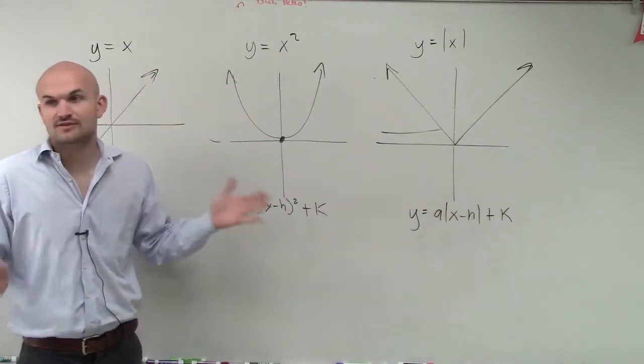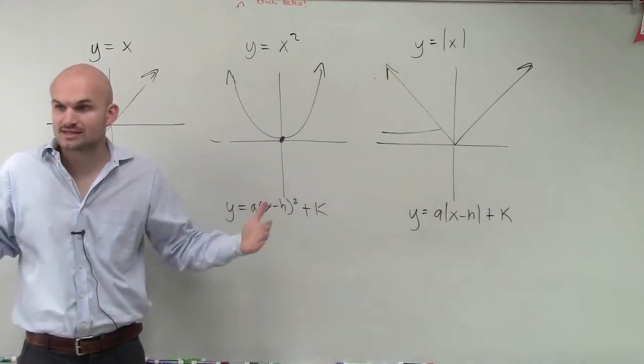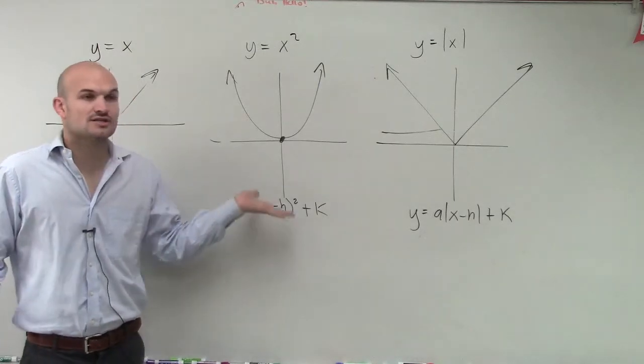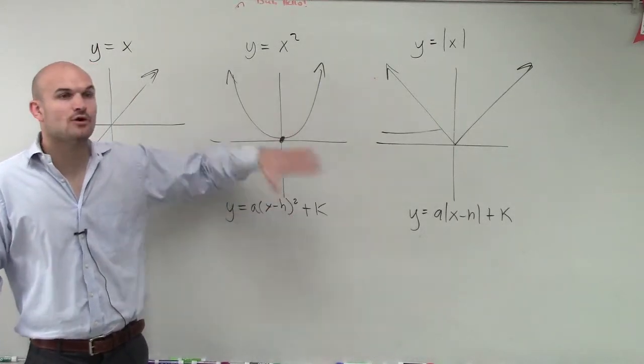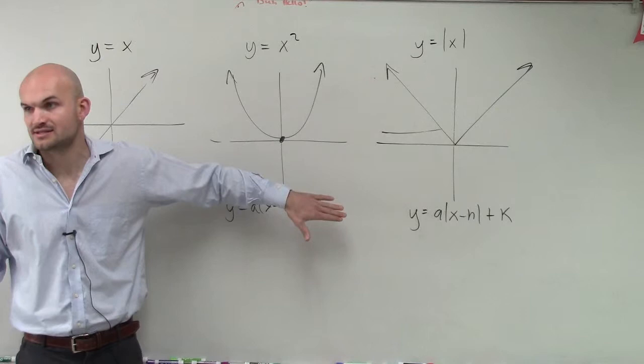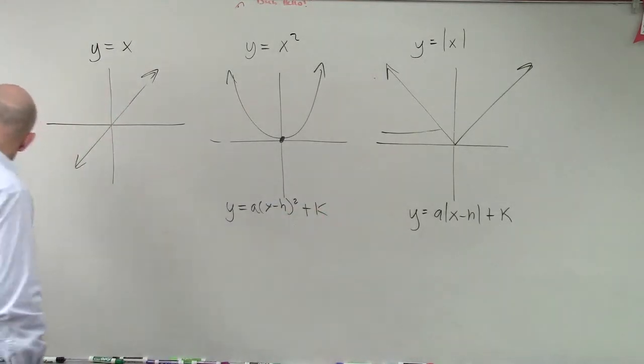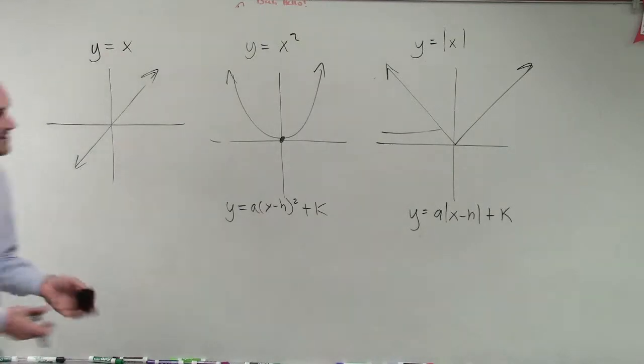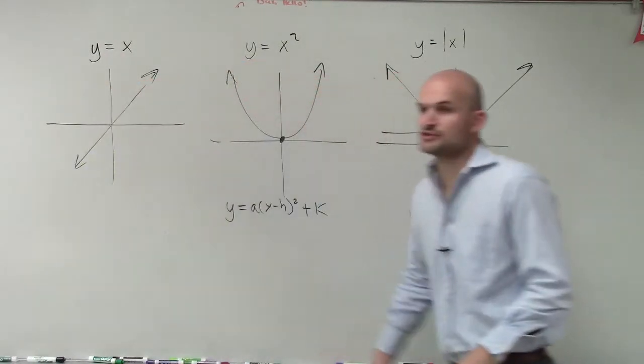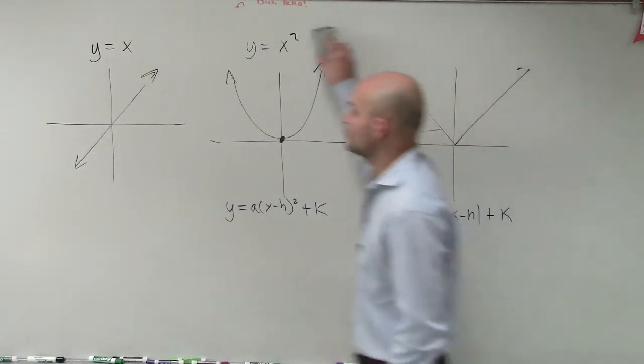And then k tells us to shift it up or down. A tells us if we're going to stretch or compress. And A also tells us if it's going to open up or if it's going to be reflected about the x-axis, right? Those are the kind of things we've been talking about so far. So let's go into, so that's your basic review of our three main functions we're going to talk about. Well, now we're going to go into a new function.